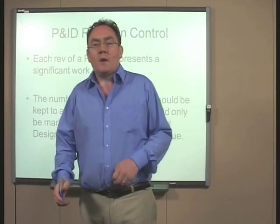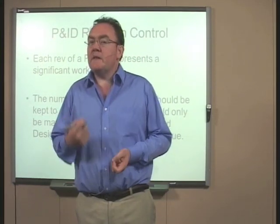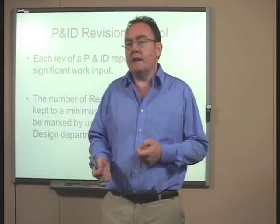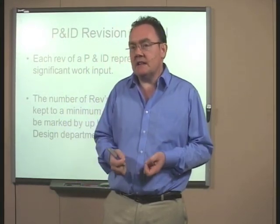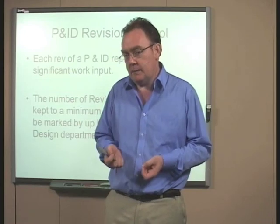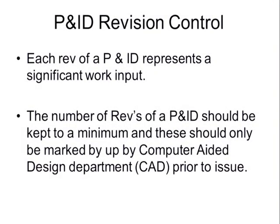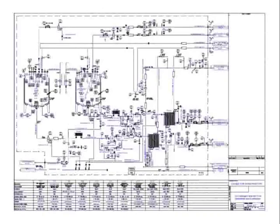With respect to revision control, each revision of a P&ID represents a significant work input. The number of revisions of a P&ID should be kept to a minimum, and these should only be marked up by the CAD department — the computer-aided design department. Let's look at our P&ID.